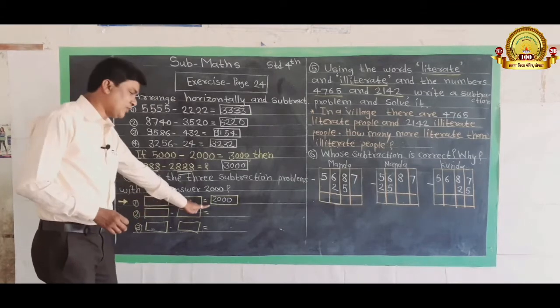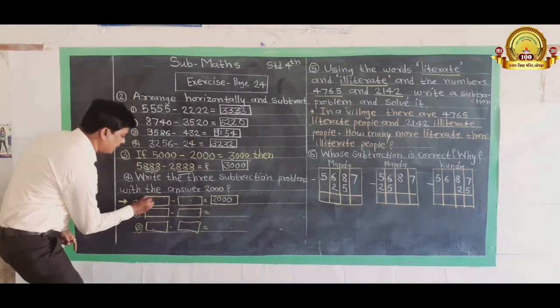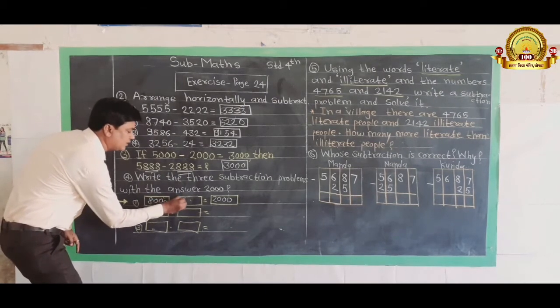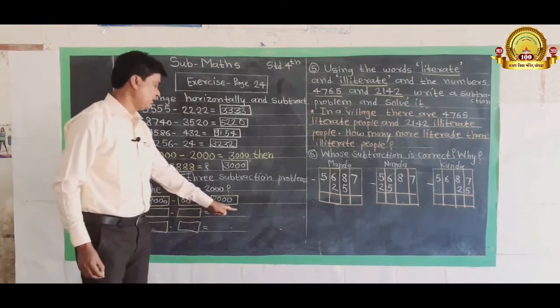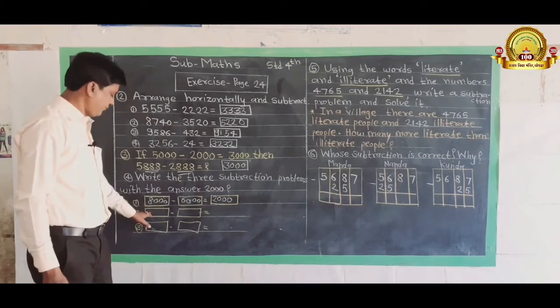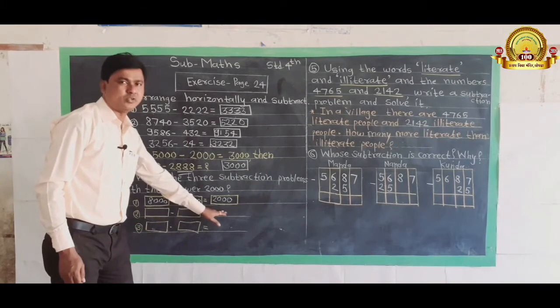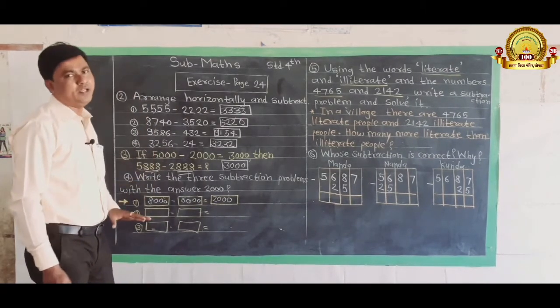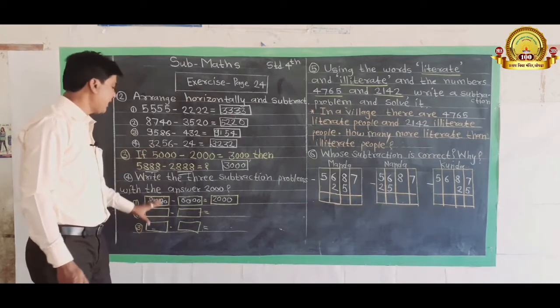I will tell you how do you get 2000 answers. 8000 minus 6000 is equal to 2000. I will tell you, 9000 is equal to 2000. You can solve further examples. You can start to get 2000 answers.